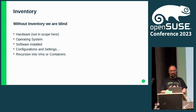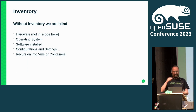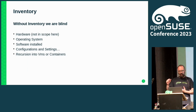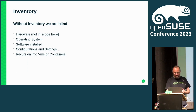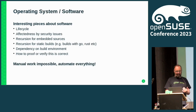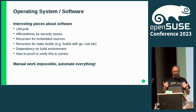The main thing we always need to start with is inventory. You need to know what you have and what is on it. Inventory exists at different levels: hardware, what operating system is running, what software is installed, how is the software configured, what specific settings are there — and of course, recursing as necessary into VMs and containers. As a software vendor, the operating system and software installed is the primary concern, along with lifecycle and the effectiveness of security issues.